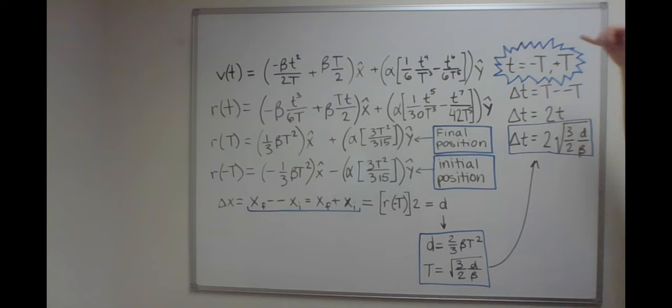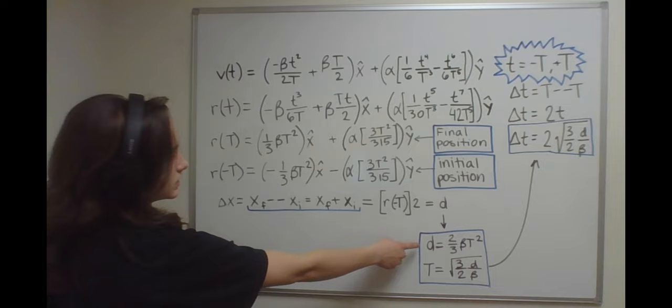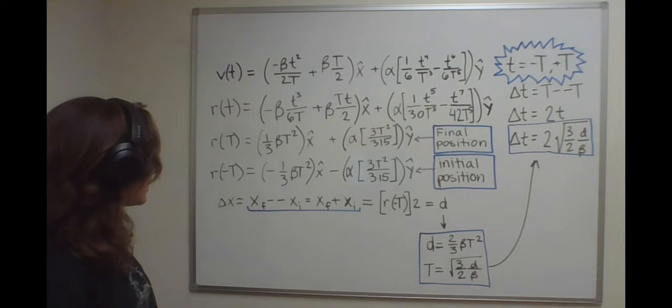Our distance equation makes sense, d equals 2 over 3 beta t squared, because when you solve for change in x, you get x-final minus x-initial.